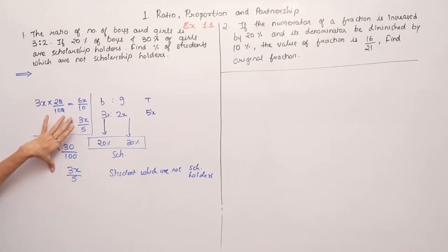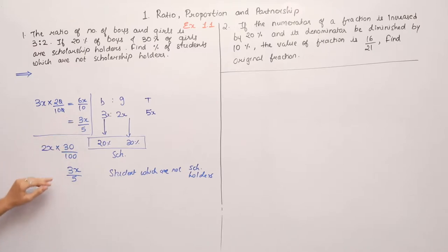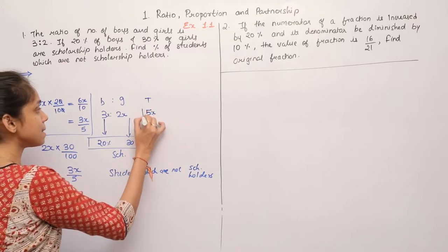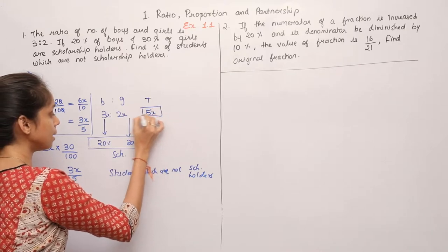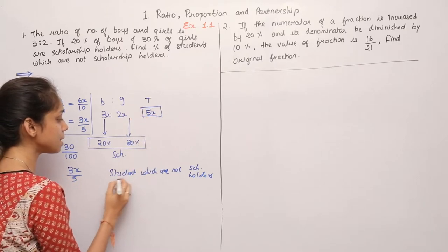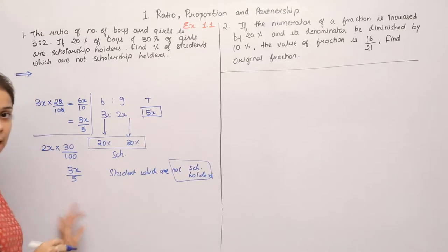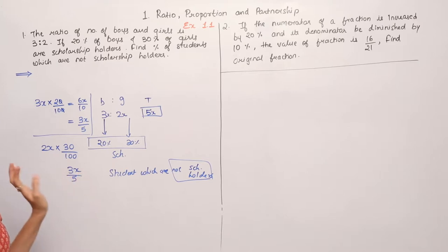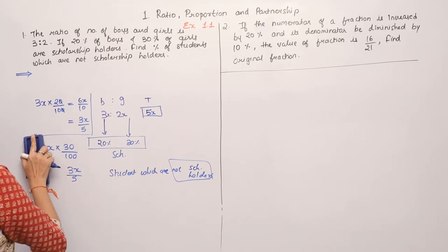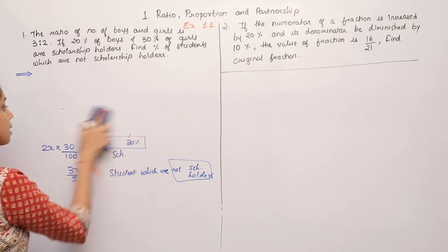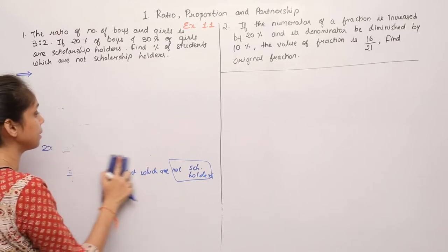This is the approach for boys and girls. If we remove scholarship holders from total students, we get the non-scholarship holders. So this is our summary of the method.